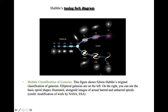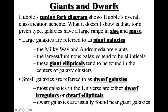We finished talking about the Hubble classification of galaxies into different categories. Apart from the Hubble classification, depending on the mass and size of galaxies, all galaxies are also classified into two categories: giant galaxies and dwarf galaxies.